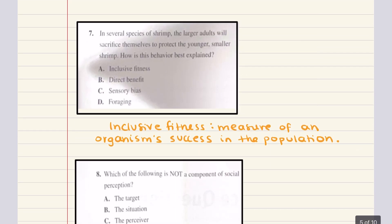Let's go ahead and move into problem seven. Seven says in several species of shrimp, the larger adults will sacrifice themselves to protect the younger, smaller shrimp. How is this behavior best explained? Is it through inclusive fitness, direct benefit, sensory bias, or foraging? Now in evolutionary psychology, inclusive fitness is a measure of the number of offspring an individual has, how they support their offspring, and how their offspring can support others. Inclusive fitness really promotes the idea that altruistic behavior can improve the fitness and success of a species, just like we talked about in lecture. And so the behavior in this scenario can be described as altruism, benefiting another at one's own expense, and it falls under inclusive fitness. And so the correct answer for seven here is going to be A.